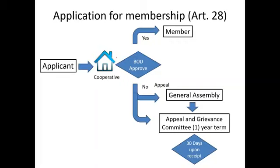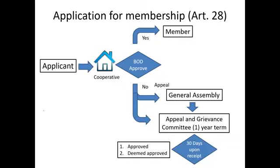If an appeal and grievance committee is created by the general assembly, you may appeal within 30 days upon receipt of the denial. If there is inaction on the part of the committee, that is deemed approved.